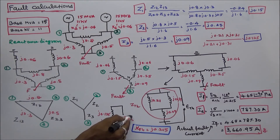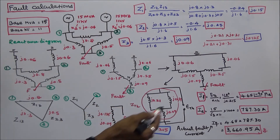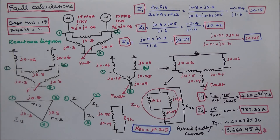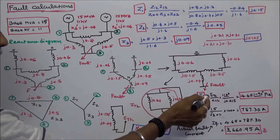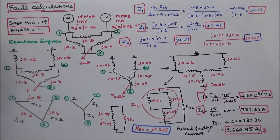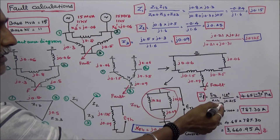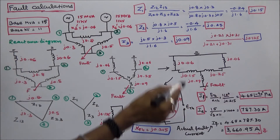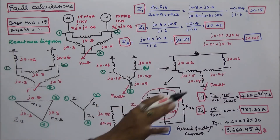The pre-fault voltage, which is the Thevenin equivalent voltage, is 1 angle 0 per unit. The per unit fault current IF is equal to the pre-fault voltage divided by the Thevenin reactance: 1 angle 0 divided by J0.215, which equals 4.65 angle minus 90 degrees in per unit.